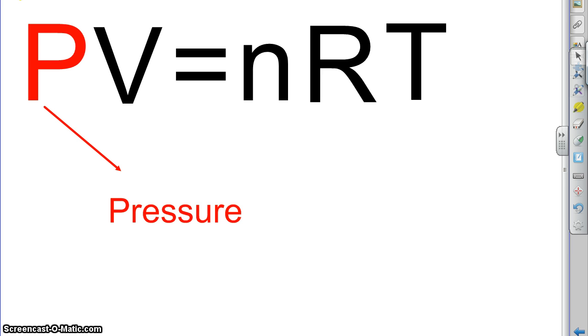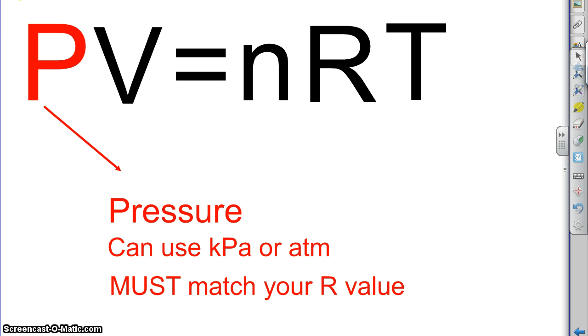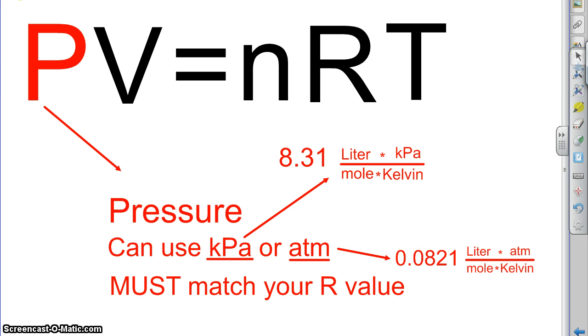Now, let's talk about pressure. P stands for pressure. The unit on pressure doesn't matter, except you have to make sure you can use either kilopascals or atmospheres, but you have to make sure that it matches your R value. You have to make sure that it's consistent with the ideal gas constant that you're plugging in. For example, if you're plugging in kilopascals for your pressure, you're going to have to use that 8.31 for your R value. But if you plug in atmospheres, you're going to have to use that R value, the 0.0821.